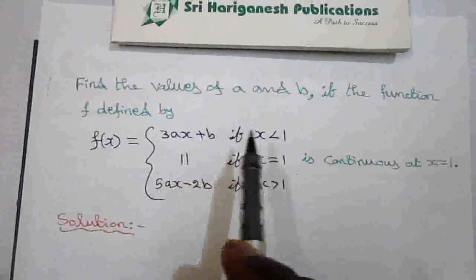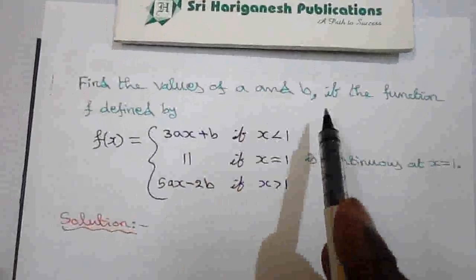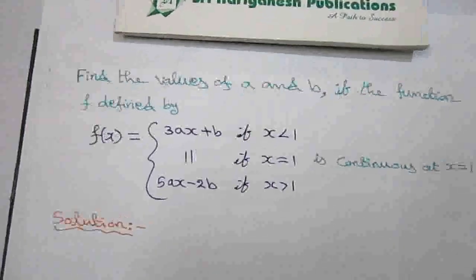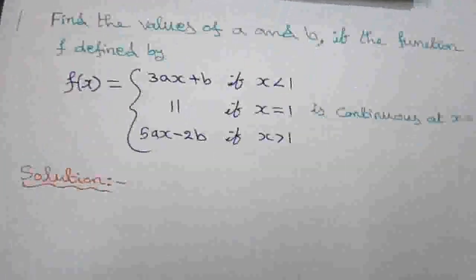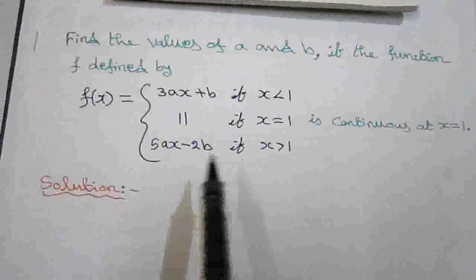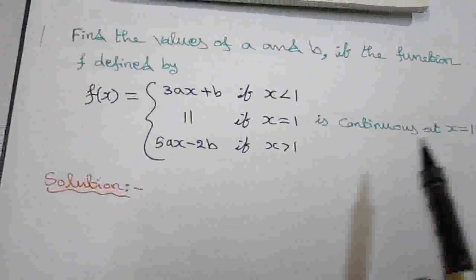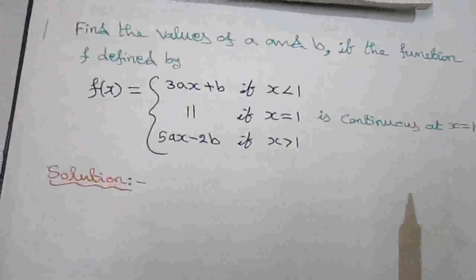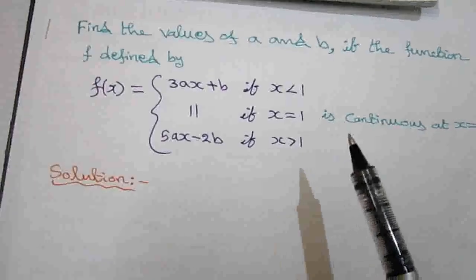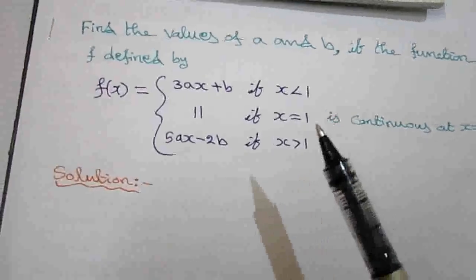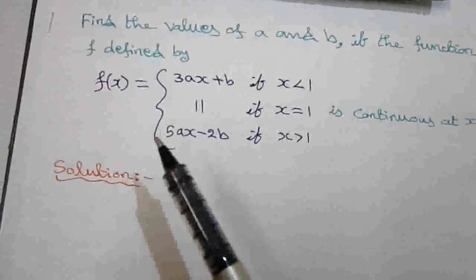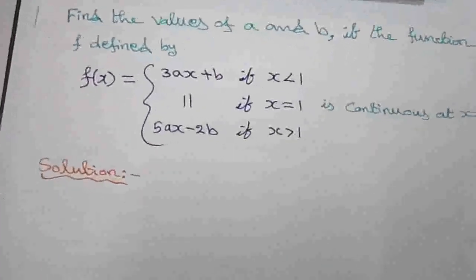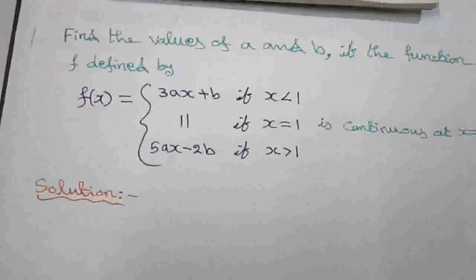We have to find out the values of a and b since the function is continuous at x equal to 1. From the definition of continuity at x equal to 1, the left-hand limit at x equal to 1 and the right-hand limit at x equal to 1 are both equal to f of 1.